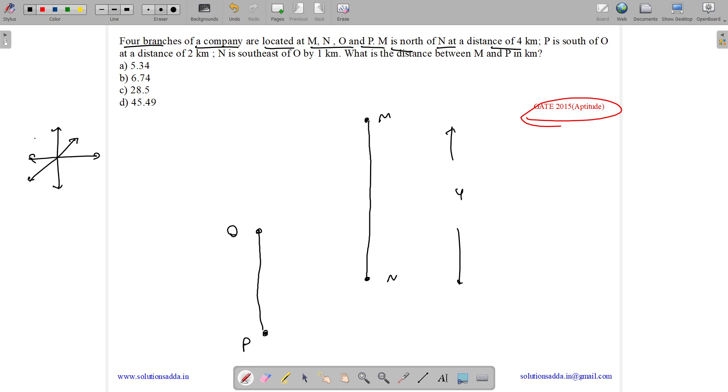So it looks like this. This is our north, south, west, east. This is north-east, this is south-east, this is south-west and this is north-west. Now it is given P is in the south of O at a distance of 2 km. N is in the south-east of O by 1 km. So this is 1 km.